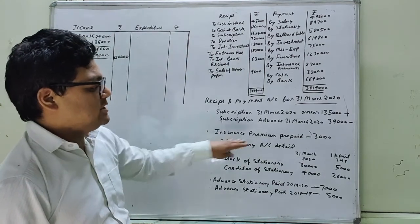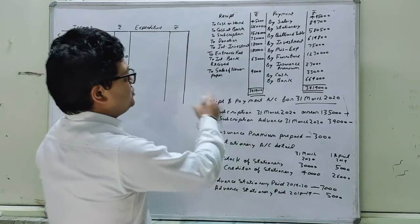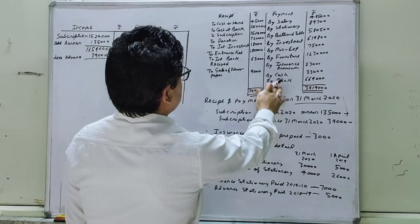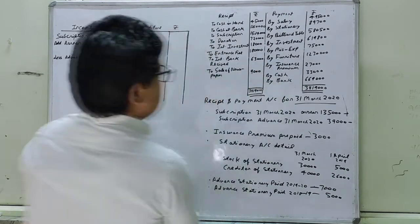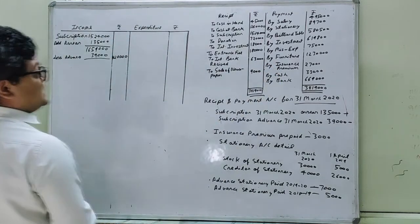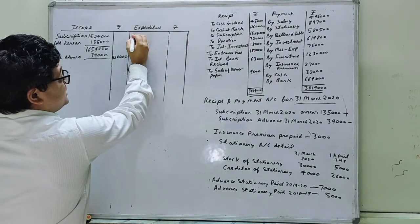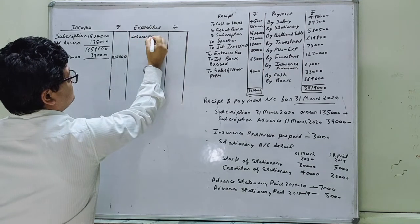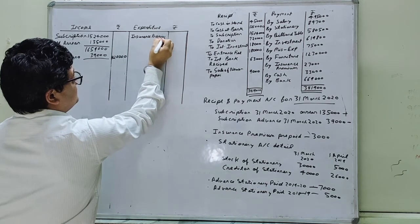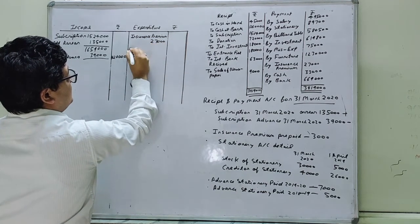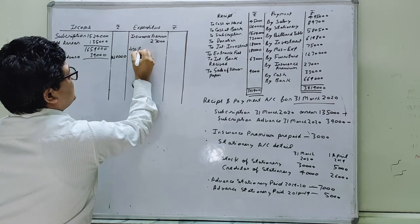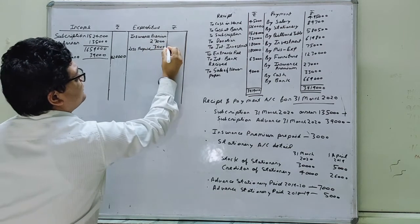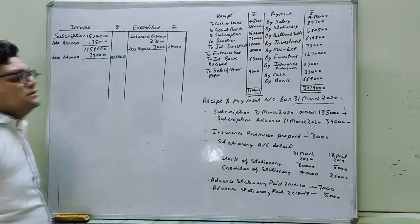Now next adjustment is insurance premium prepaid. Prepaid means minus. So insurance premium, how much insurance premium we are having? 27,000. So insurance premium will come on expenditure side, insurance premium 27,000, less prepaid 3,000. How much? 24,000. Done.